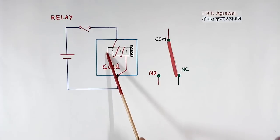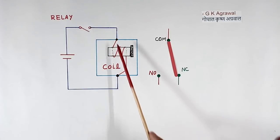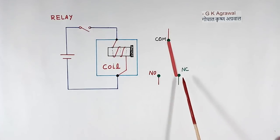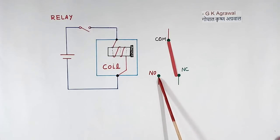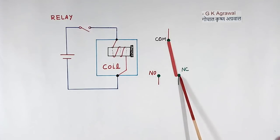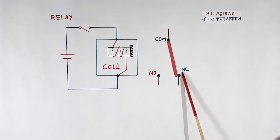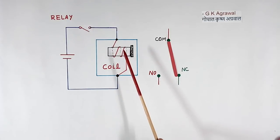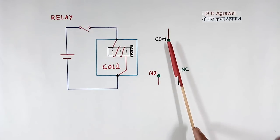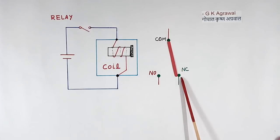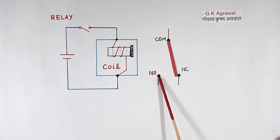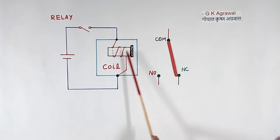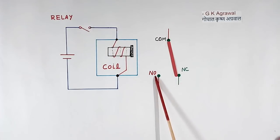In the relay there is a coil with two terminals — one here and one here — and one contact which has three terminals: one common, one NC (normally closed), and one NO (normally open). The NC contact is normally closed because when current is not available, this contact is closed. The NO contact is normally open — when current is not available it is open, and when current flows it closes. So this is NO and this is NC.